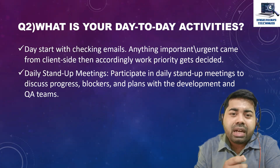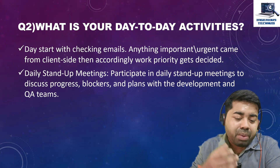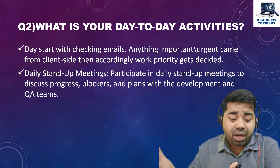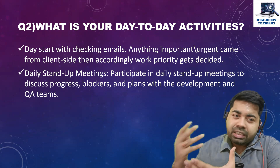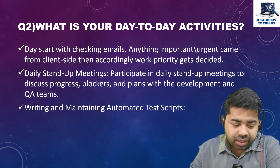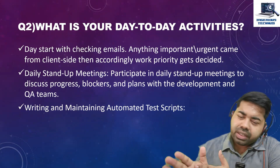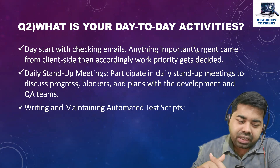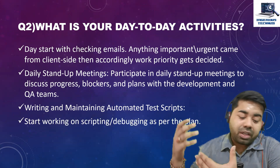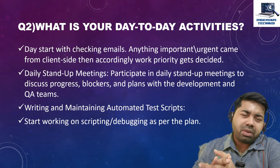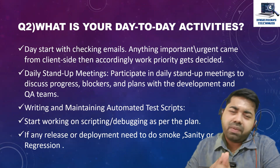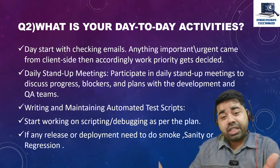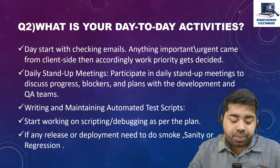Then attend the daily stand-up meeting — participate to discuss progress, blockers, and plans with the development team. In the agile perspective that is called a scrum meeting or daily stand-up meeting. As an automation tester, regular tasks include writing and maintaining automation scripts, scripting, and debugging as per the plan. If there is any release or deployment, we are involved in smoke testing, sanity testing, and regression testing.